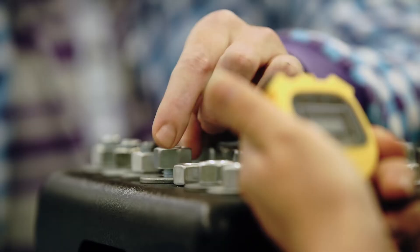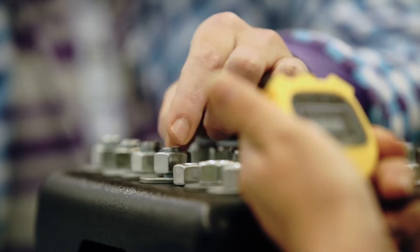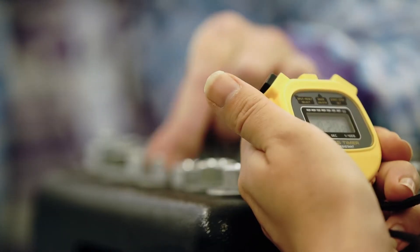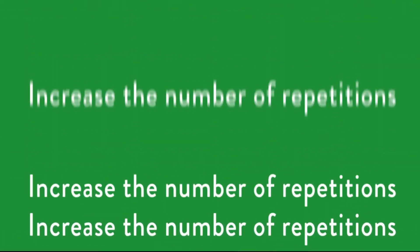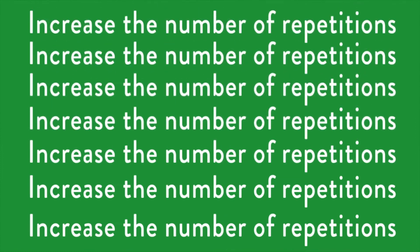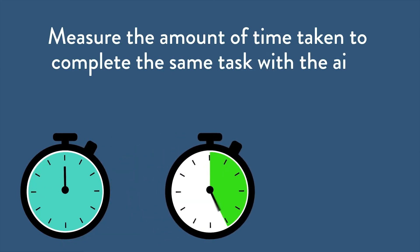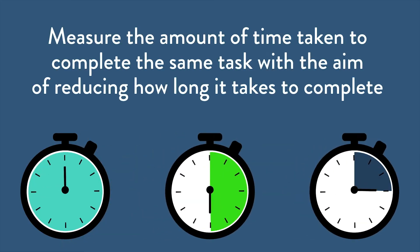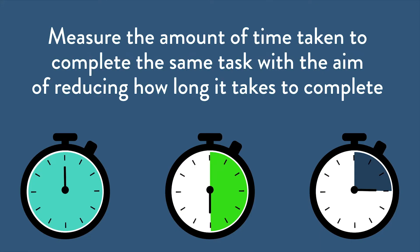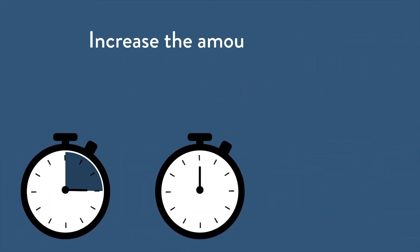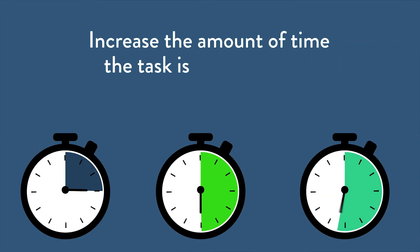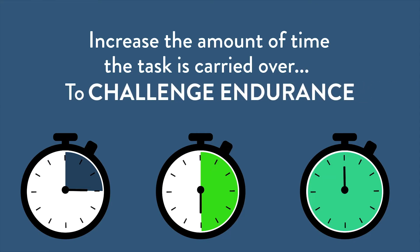Another way to shape an activity is to challenge speed. Some examples include increasing the number of repetitions to complete in the same amount of time, measuring the amount of time taken to complete the same task with the aim of reducing how long it takes, or increasing the amount of time the task is carried out for to challenge endurance.